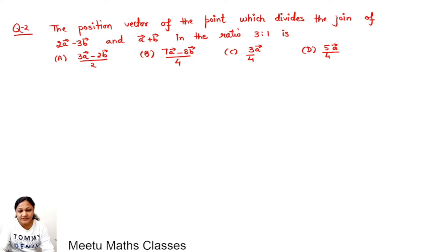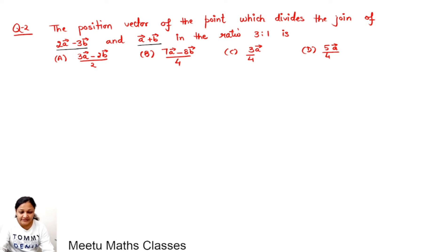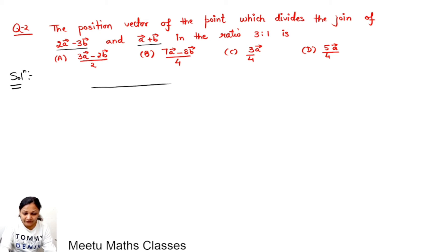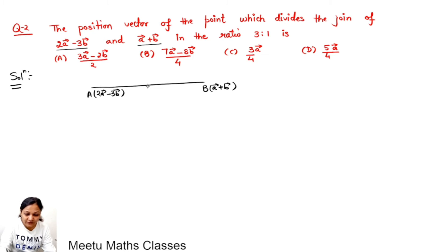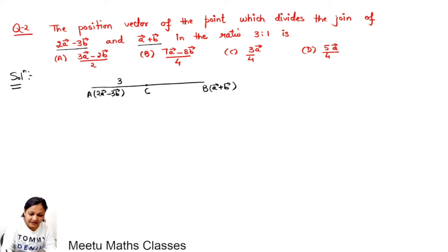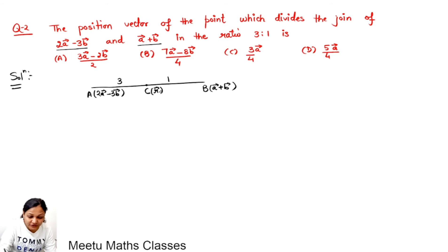The second question: find the position vector of the point which divides the join of two points in the ratio 3:1. We are given point A whose position vector is 2a minus 3b, and point B whose position vector is a plus b. We are supposed to find the position vector of C which divides it in the ratio 3:1.